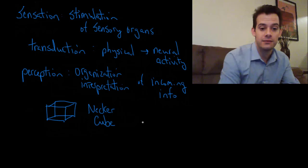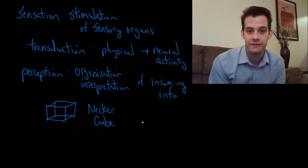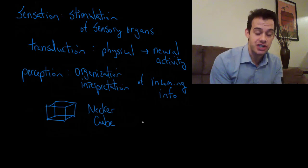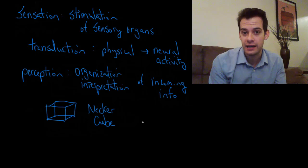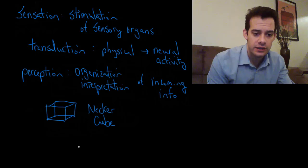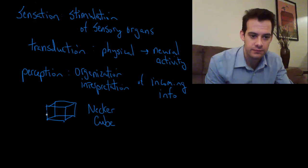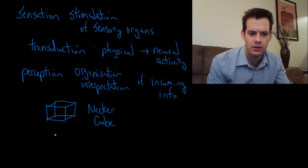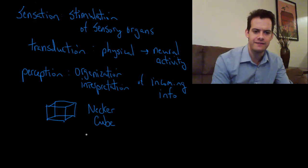This is a very simple demonstration of the idea that the sensation can be perceived in multiple ways. There are multiple interpretations. When you look at this, you can choose to see this as the front panel with it extending to the right there, or you can choose to see this as the front panel with it extending off to the left here.